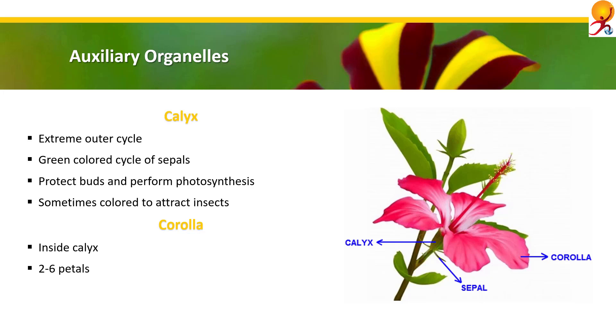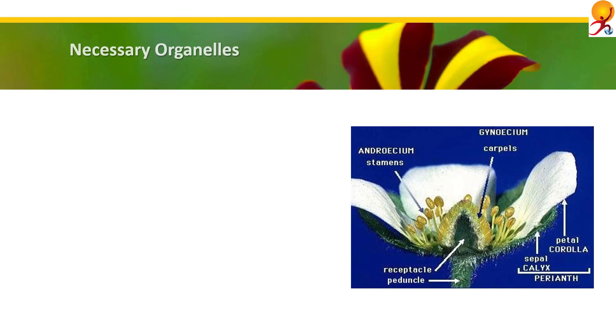Corolla: this is the second whorl of flowers, confined inside the calyx. It is mainly composed of two to six petals and it is also colored, its main function being attracting insects for pollination. Necessary organelles — Androecium.